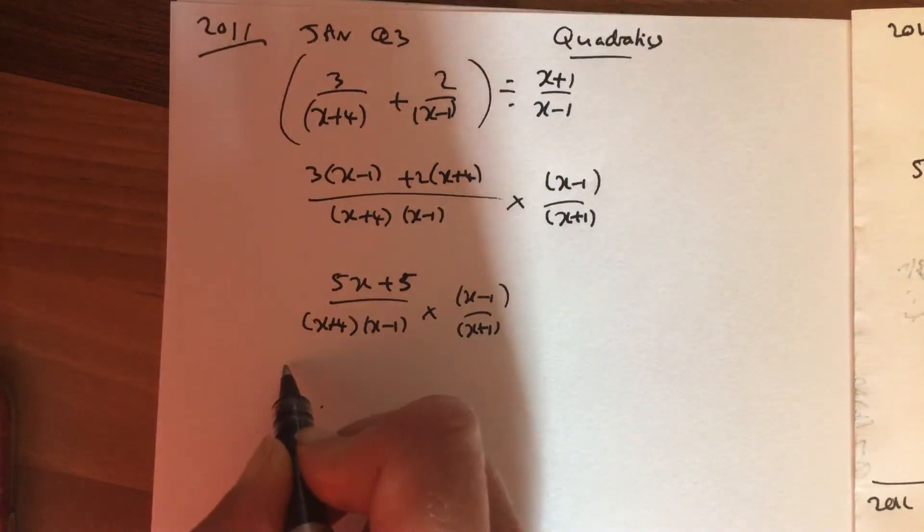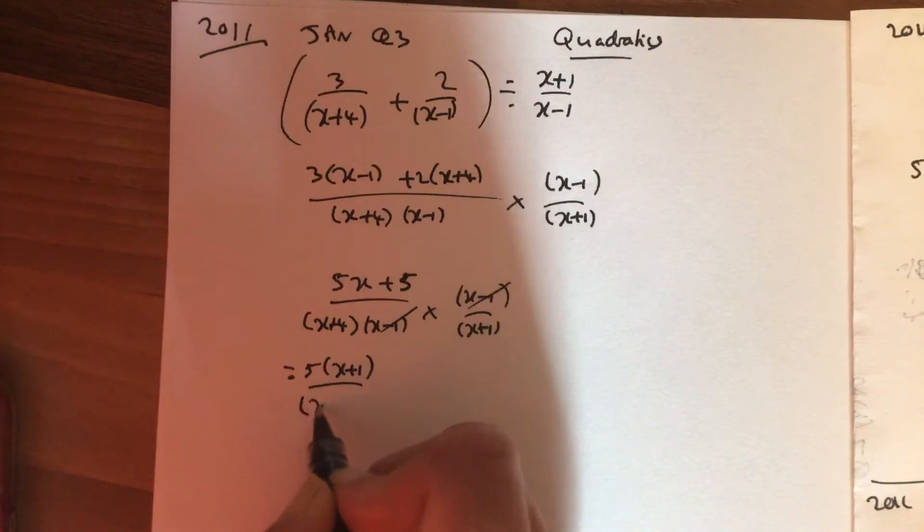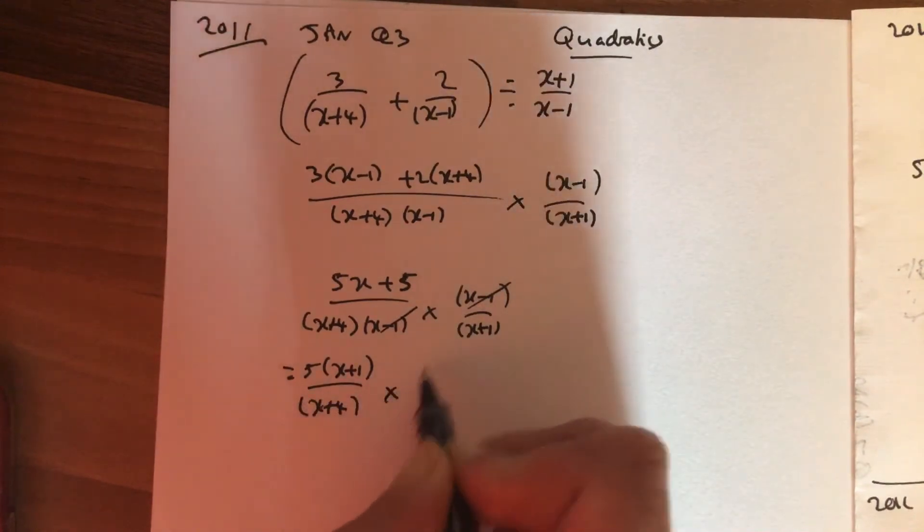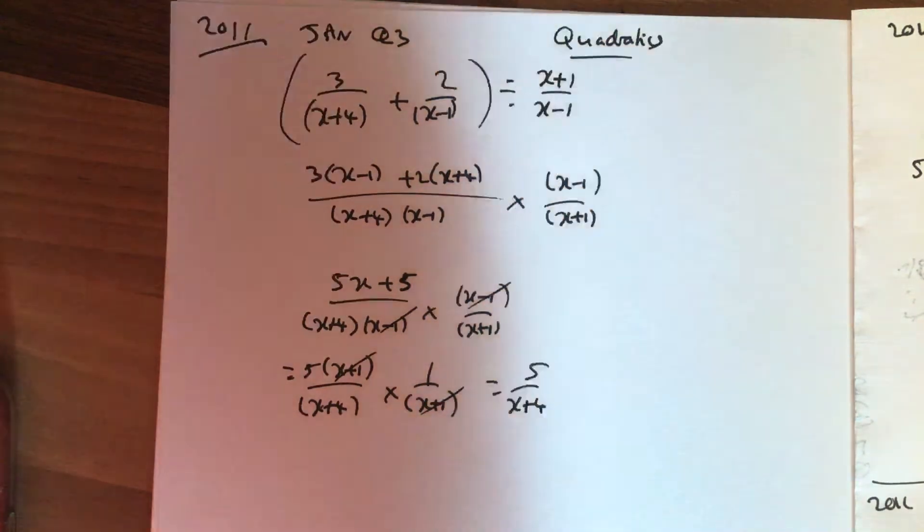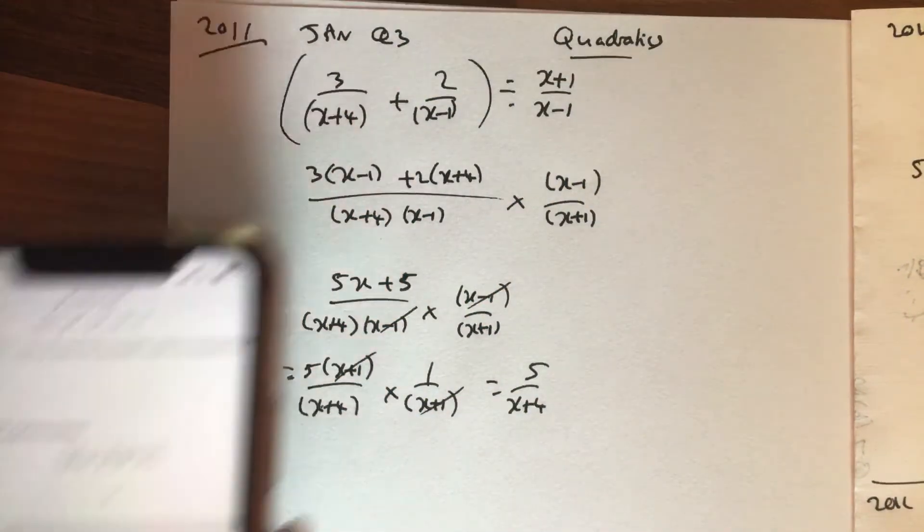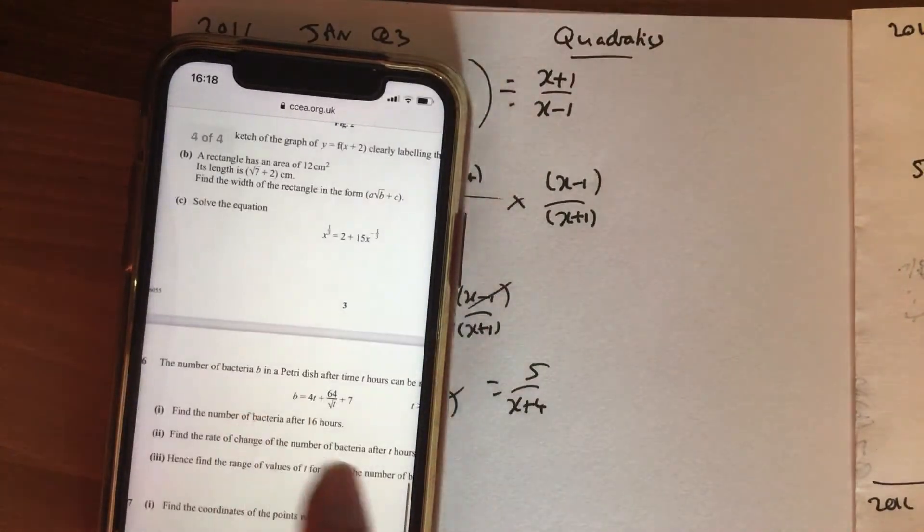Now you can factorize out your 5, x add 1. Sorry, these here cancel off. x add 4 times 1 over x add 1. That bracket cancels that bracket, giving you an answer of 5 over x plus 4.